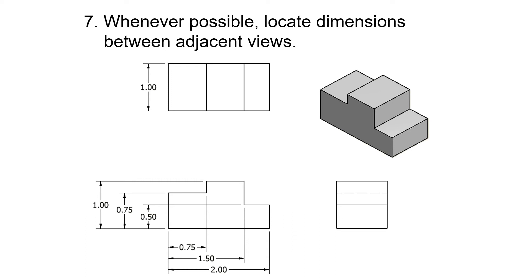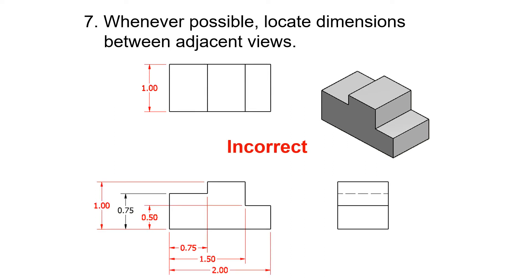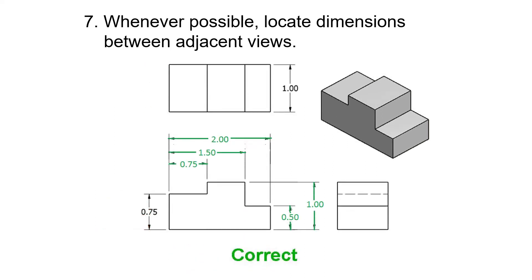Whenever possible, locate dimensions between adjacent views. I see this mistake all the time. We set up our multi-view drawings with the glass box method so that when you place the dimensions in between the views, you can easily see between the front and the top or the front and the right side.